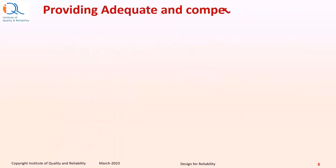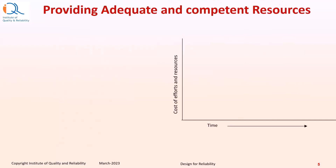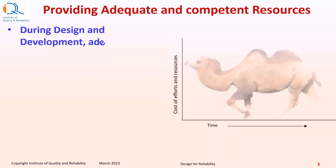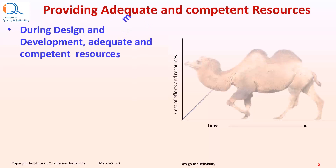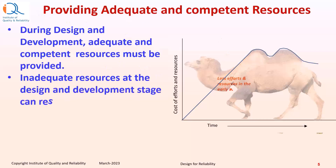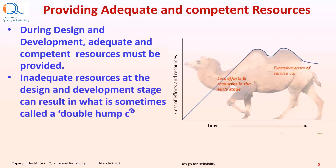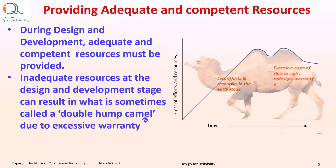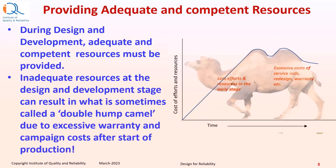Providing adequate and competent resources is important. Inadequate resources at the design and development stage can result in what is sometimes called a double hump camel of excessive warranty and campaign costs after the start of production.